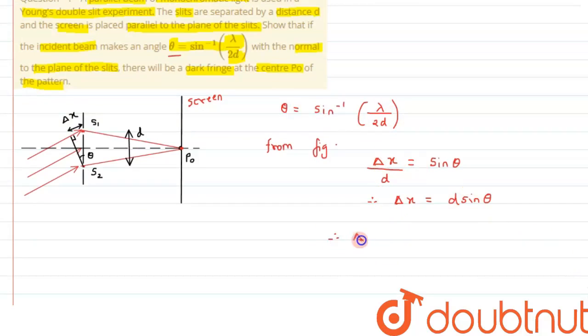And sine theta from above has been given, therefore we can write Δx will be equal to, instead of sine theta we can write it as lambda upon 2d. This comes out to be lambda by 2. So this is the path difference we are getting.